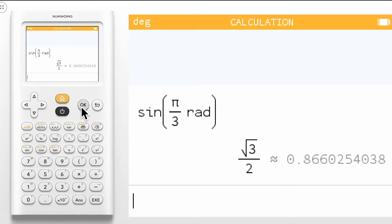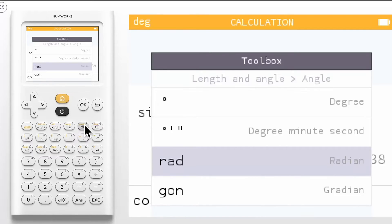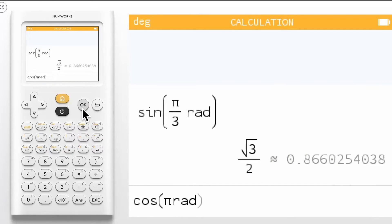The toolbox will remember where you left off. If I want to compute another trig value using a radian angle measurement, simply type in the value you want to compute. Then use the toolbox key again to include the desired units.